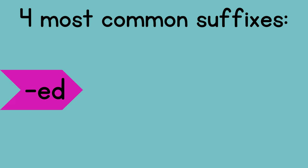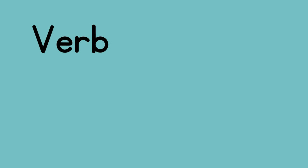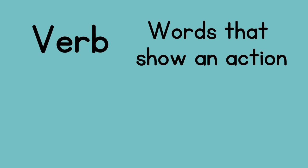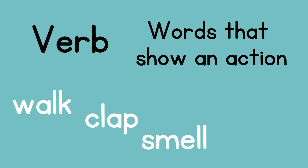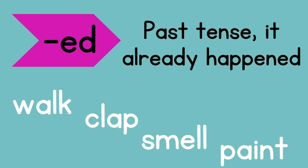They are: -ed, -ing, -ly, and -s or -es. We will look at -ed first. The suffix -ed is often added to verbs. Verbs are words that show an action — a verb might be walk, clap, smell, or paint. It's something that we do. When we add the suffix -ed, it means past tense, like it already happened.